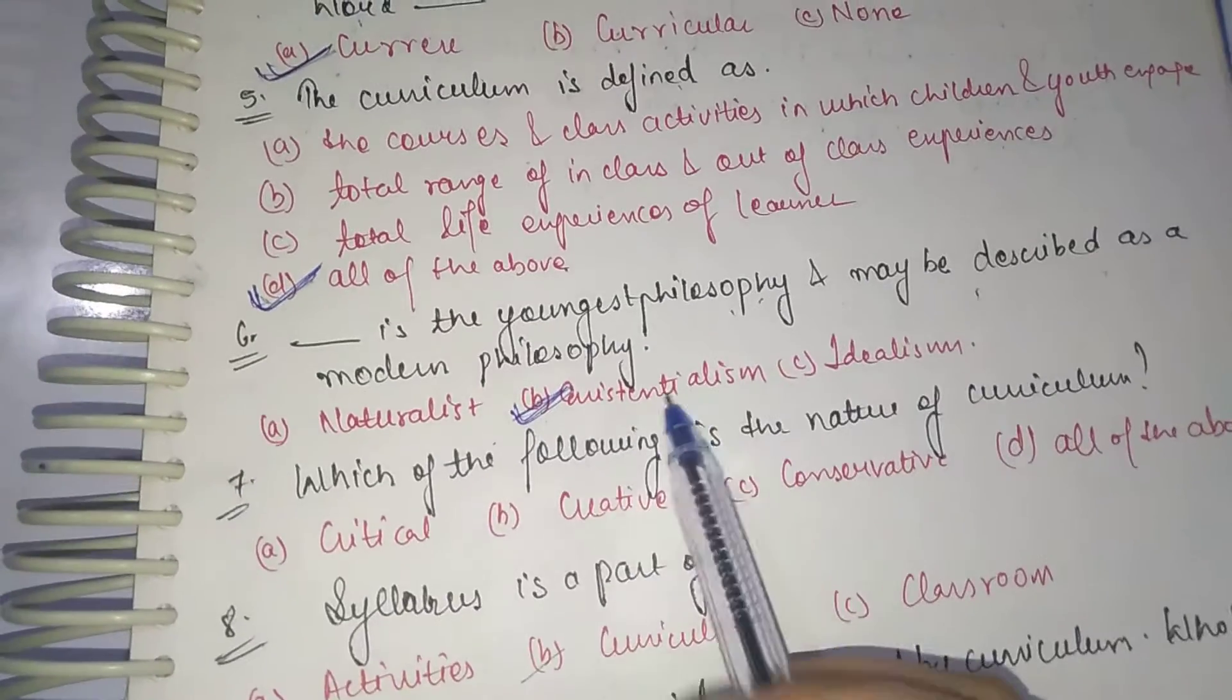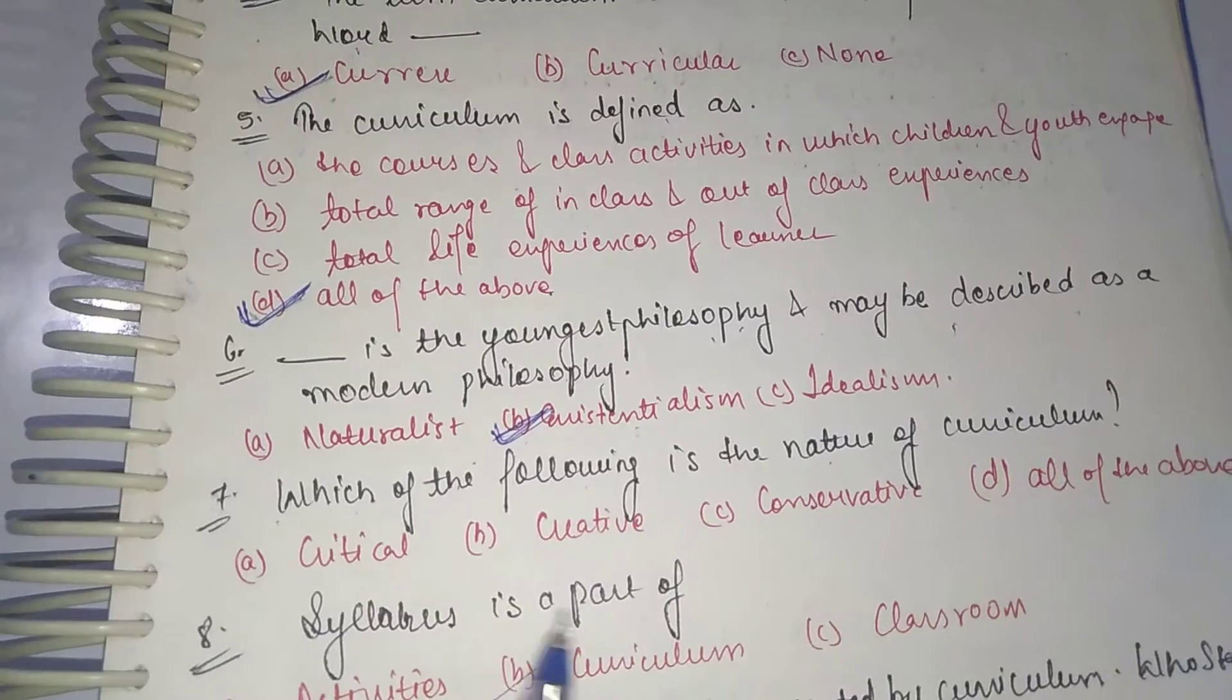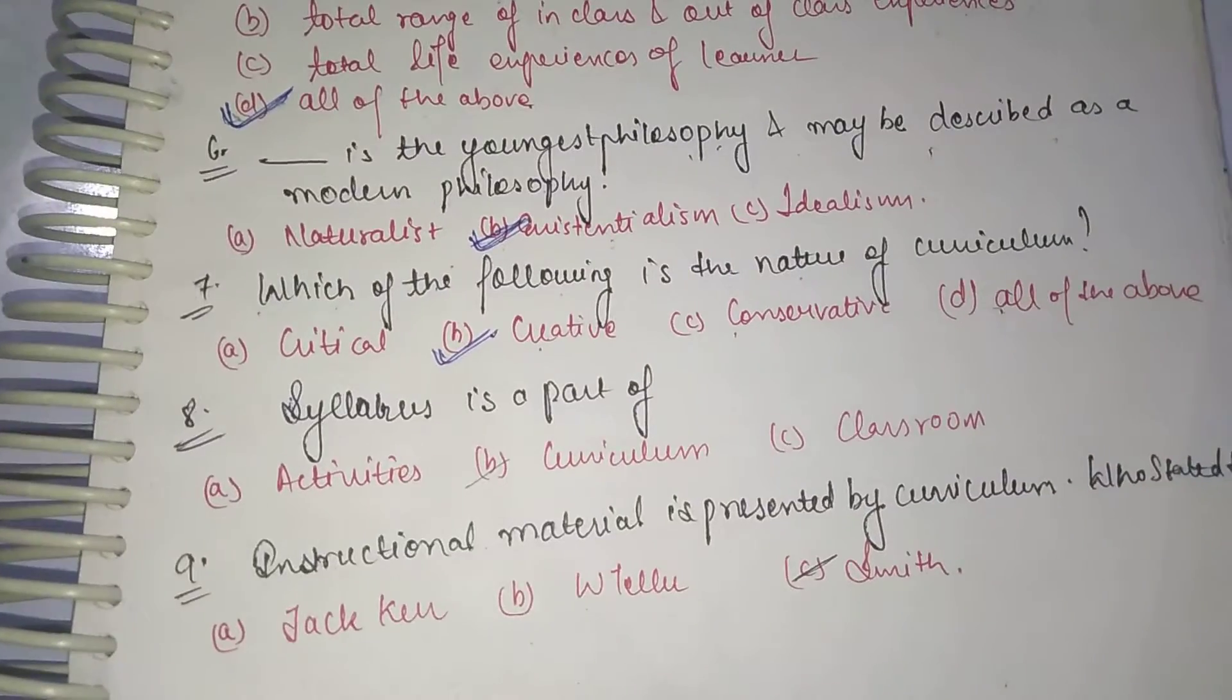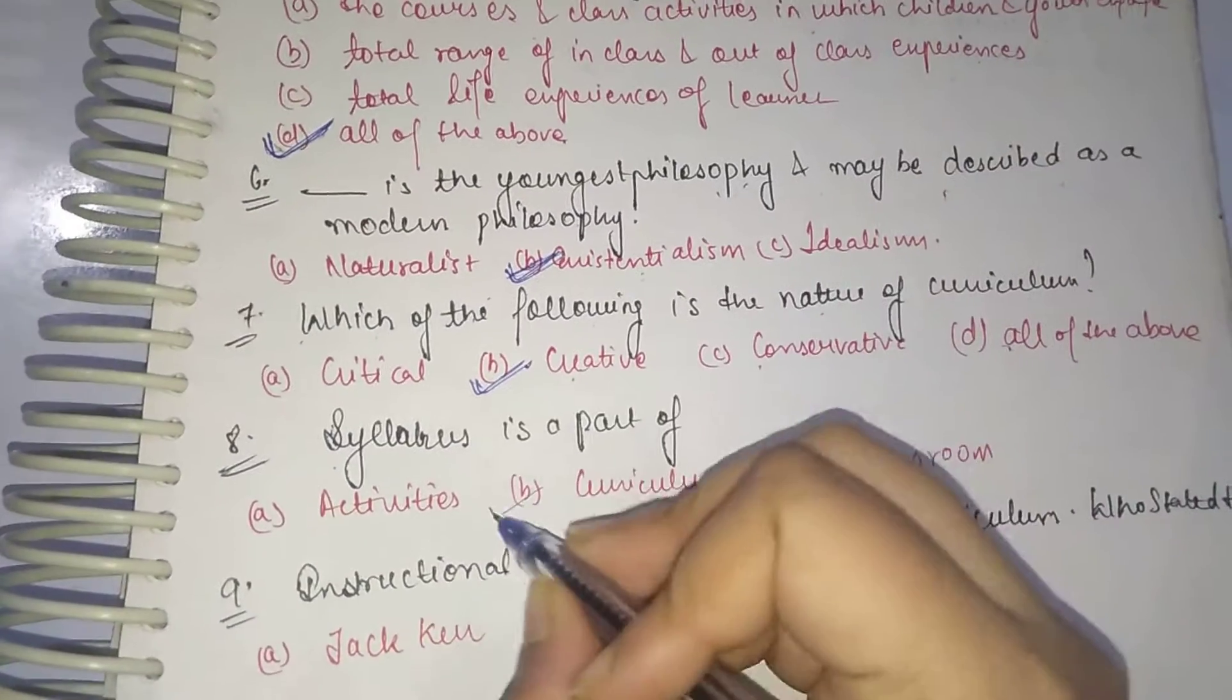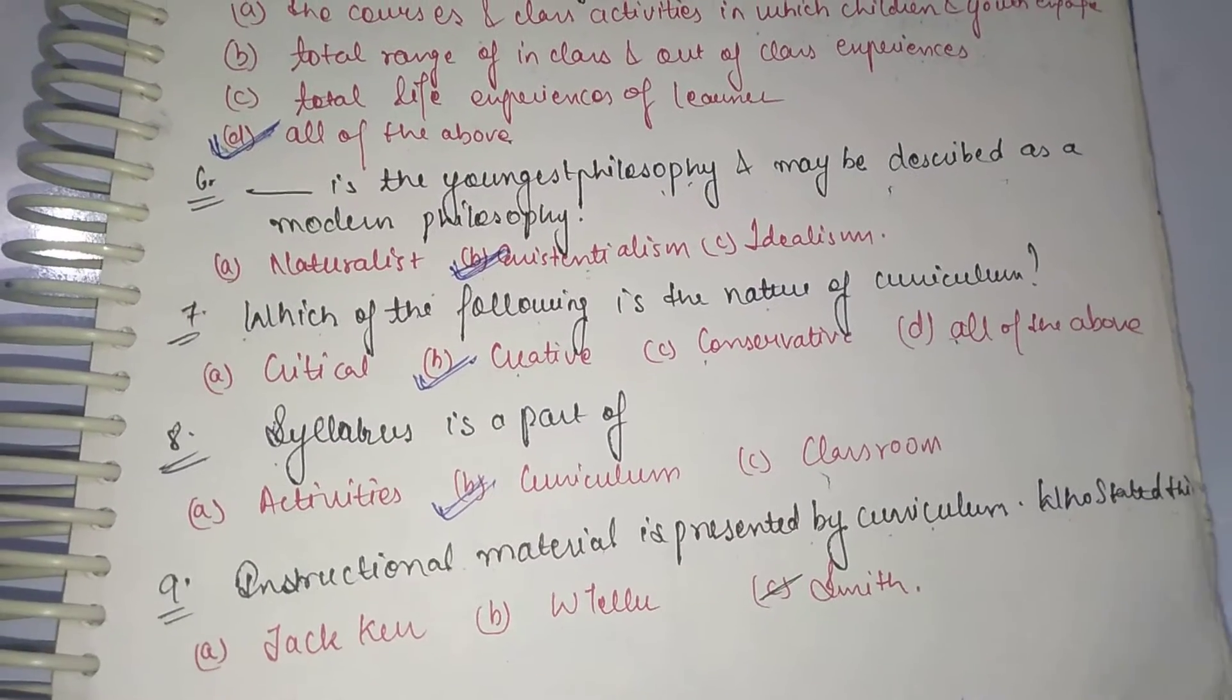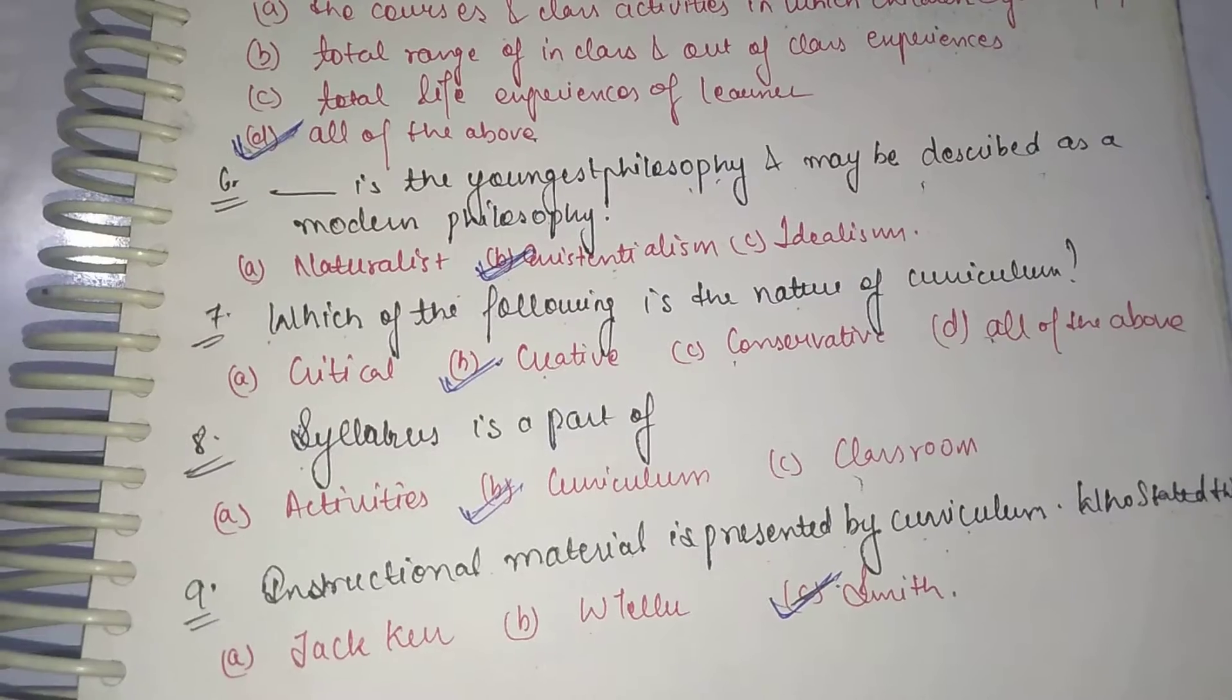Which of the following is the nature of the curriculum? It is critical, creative, conservative, or all of the above. We know that it is creative. Next: Syllabus is a part of curriculum. Next question is: Instructional material is presented by curriculum. Who said this? It was stated by Smith.